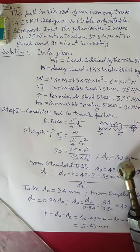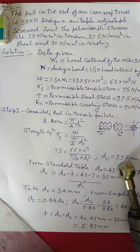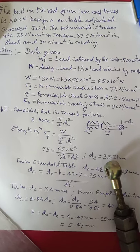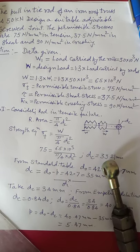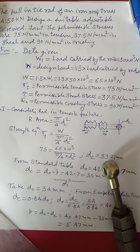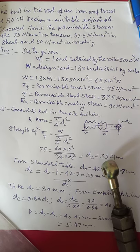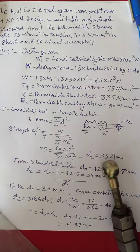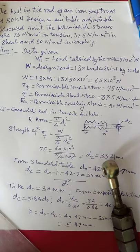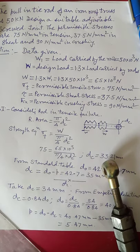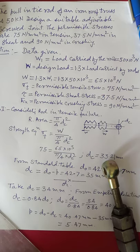First we write the data given. W1 is the load carried by the rod, that is 50 into 10 raised to 3 newton. Now W is the design load, taken as 30 percent more than the applied load. We multiply it by 1.3, so the value of design load comes out to be 65 into 10 raised to 3 newton.